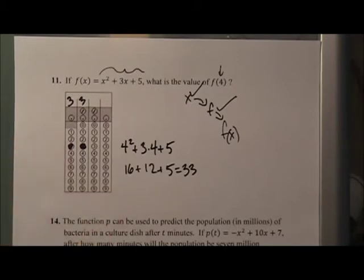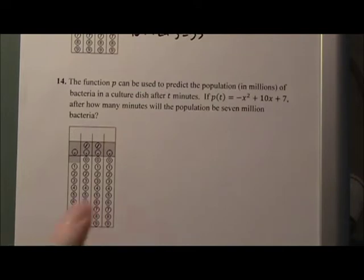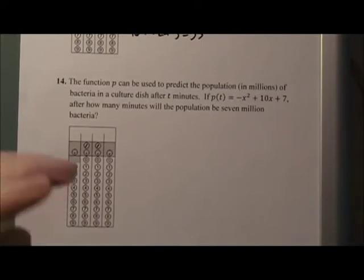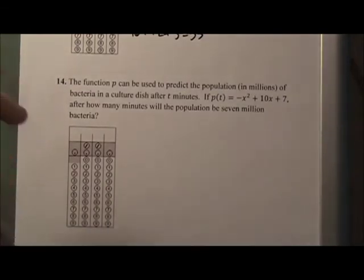And like I said, this is very similar to what students are used to seeing, so this shouldn't feel too unusual. The next question however starts to mess around with that idea. So let's look at number 14. Again, this is 14 but starting on 9, so this is medium, sort of on the cusp of being a difficult question. And it says the function p can be used to predict the population in millions of bacteria in a culture dish after t minutes. If p of t equals negative x squared plus 10x plus 7, after how many minutes will the population be 7 million bacteria?